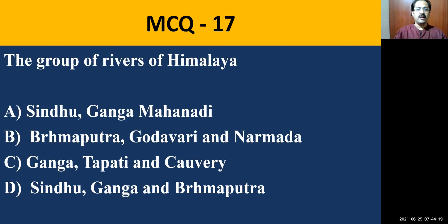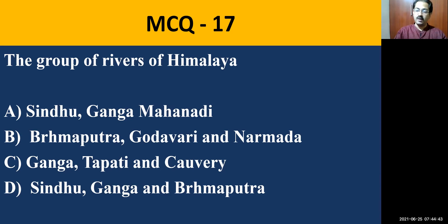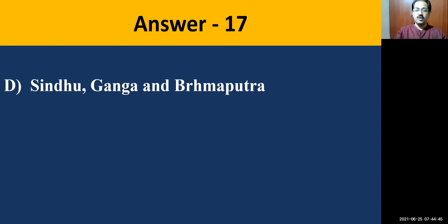MCQ question number seventeen: A group of rivers of the Himalaya — choose from: Sindhu, Ganga, Mahanadi, Brahmaputra; Godavari and Narmada; Ganga, Tapati, and Kaveri; or Sindhu, Ganga, and Brahmaputra. The correct group of Himalayan rivers is Sindhu, Ganga, and Brahmaputra.